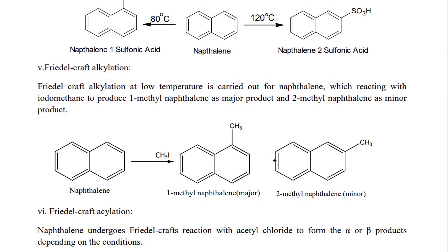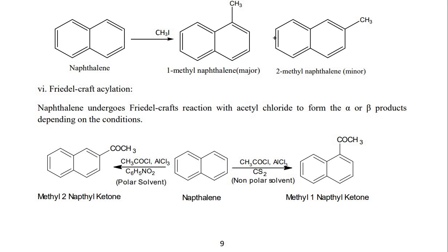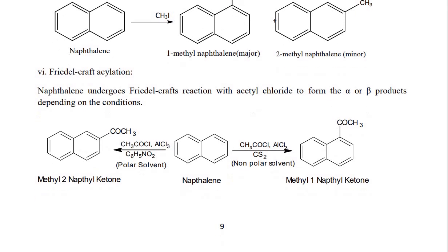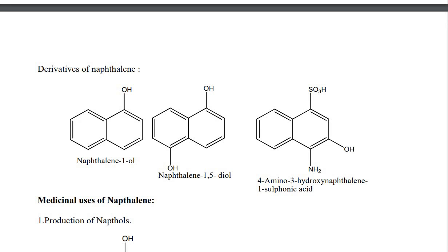Friedel-Crafts alkylation: at low temperature, naphthalene reacts with iodomethane to produce 1-methylnaphthalene as the major product and 2-methylnaphthalene as the minor product. Friedel-Crafts acylation: naphthalene undergoes acylation with acetyl chloride to form the alpha or beta products depending on the conditions. In polar solvent it gives methyl 2-naphthalene ketone, and in non-polar solvent it gives methyl 1-naphthalene ketone.